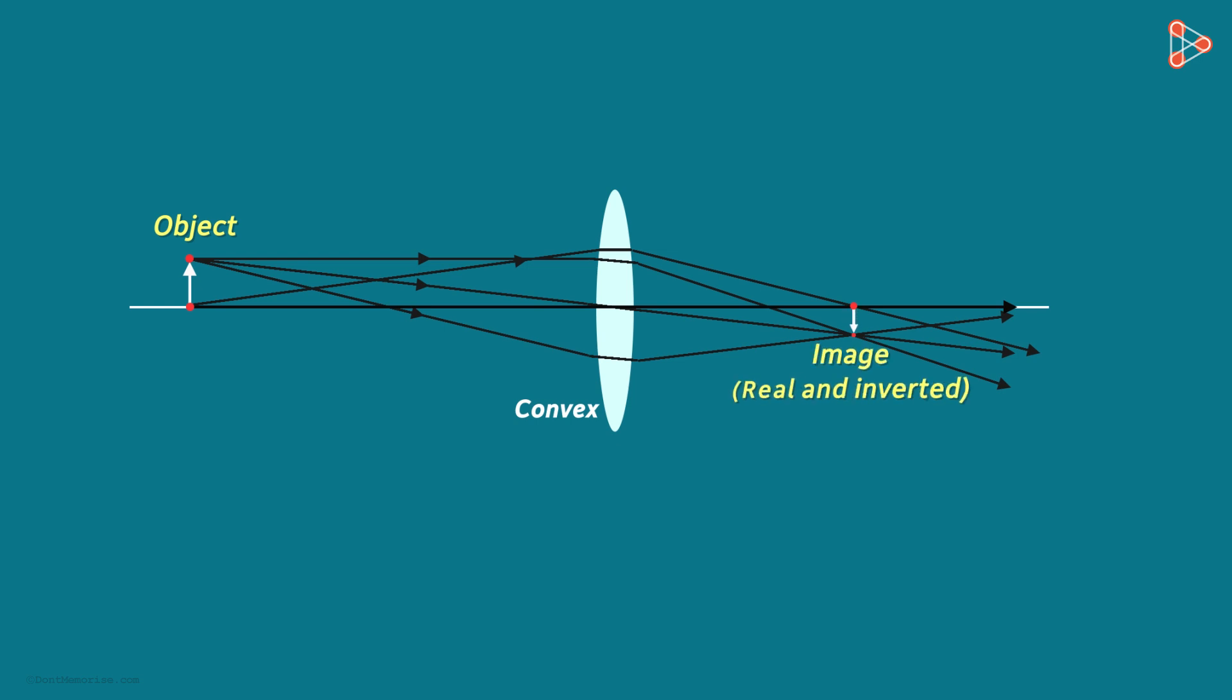This is a real and inverted image. This is the image formed for an object when a convex lens is used.